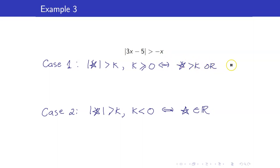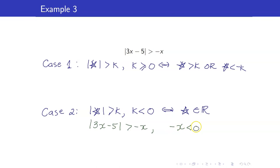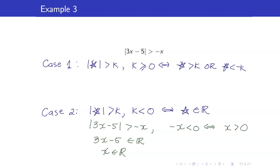I'll start with Case 2 because it has an easier solution. For Case 2, negative x is less than 0, which means x is greater than 0. If the absolute value of ★ is greater than a negative number, then ★ can be any real number — so x can be any real number. We take the intersection of x greater than 0 and all real numbers, giving us x is greater than 0.